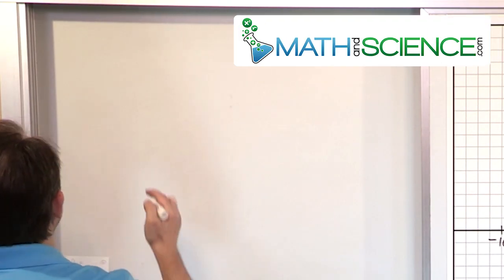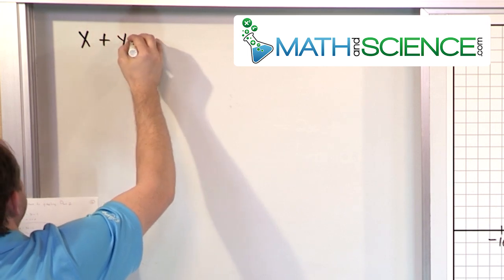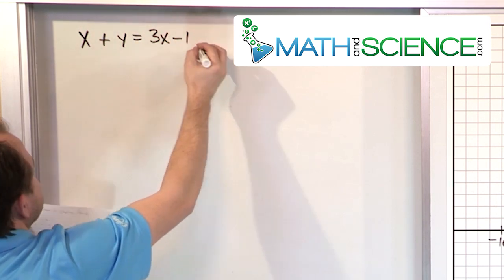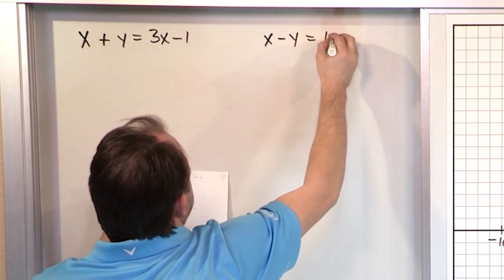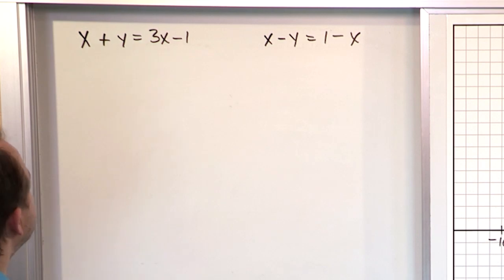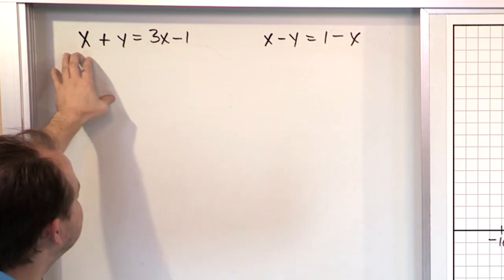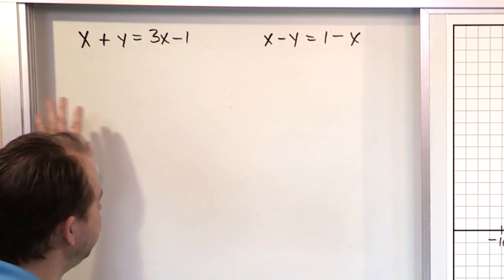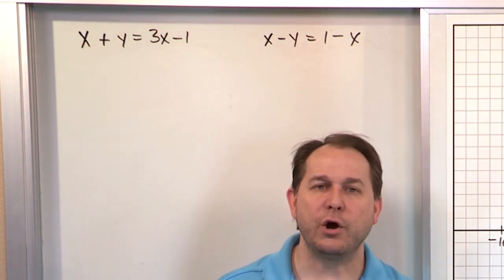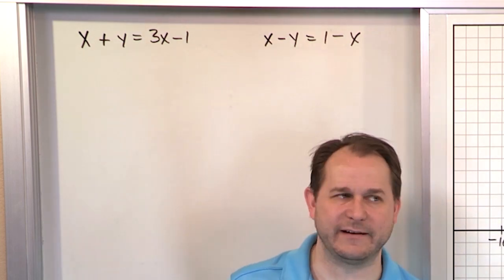Let's take a look at the first set of equations for the system. x plus y equals 3x minus 1, and the other part of the system is x minus y is equal to 1 minus x. Now the first thing you might do is look and say these do not look like lines. These look nothing like anything I've seen before. It is true that the form of these equations doesn't quite look like standard form, and they definitely don't look like mx plus b form. But the deal is, you know that there are lines, even though I haven't put it in flashing symbols for you.